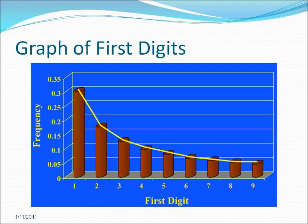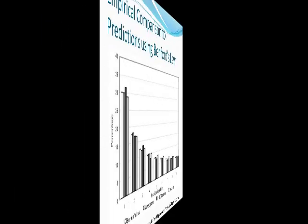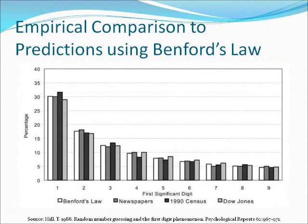Auditors contest the authenticity of lists of numbers by comparing the actual and expected digital frequencies. The digit patterns of authentic numbers should conform to the expected frequencies of Binford's law.